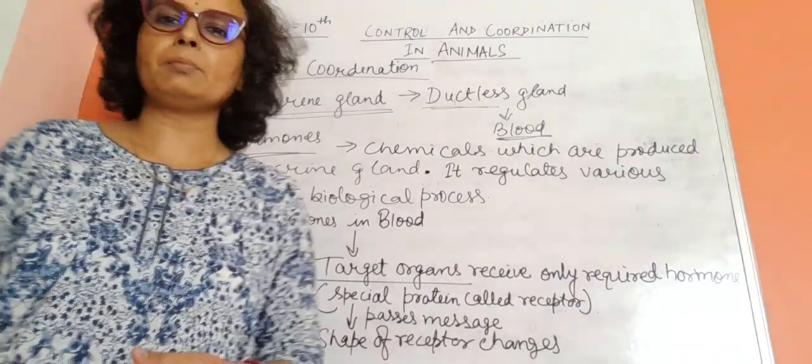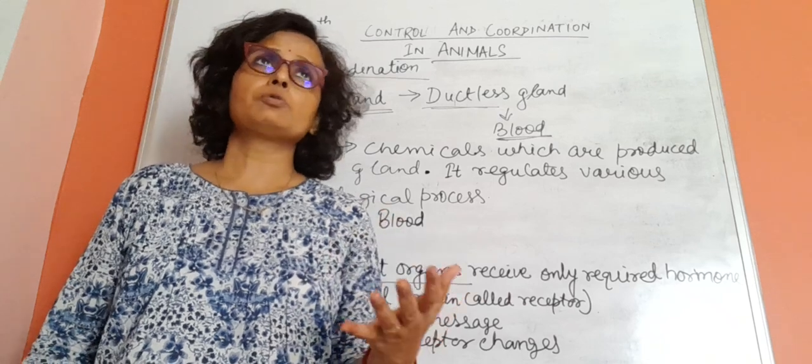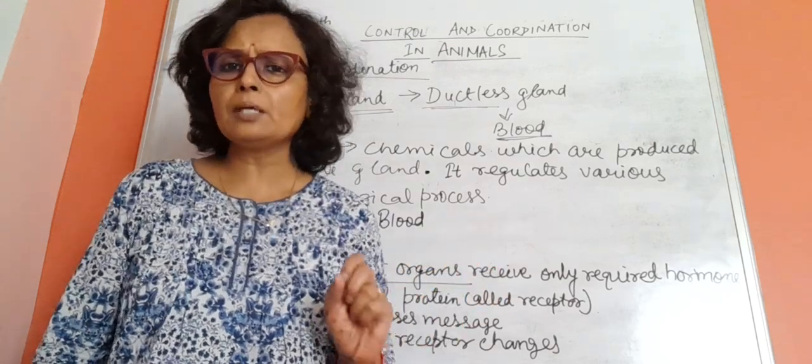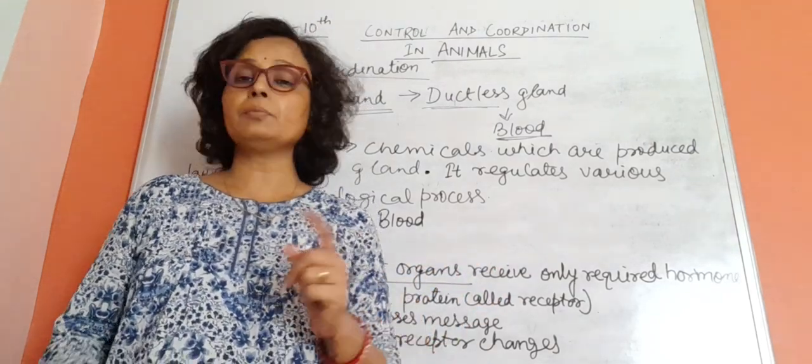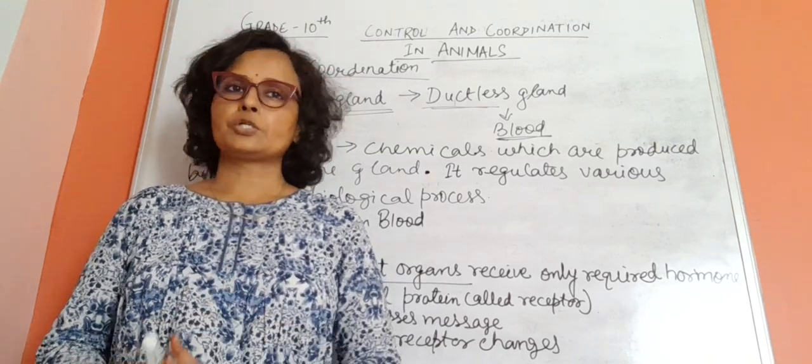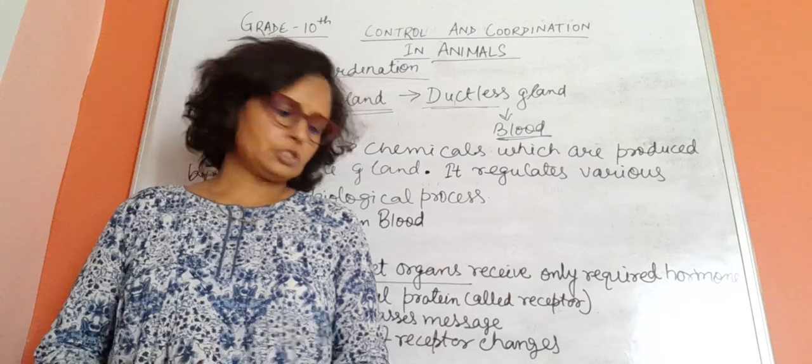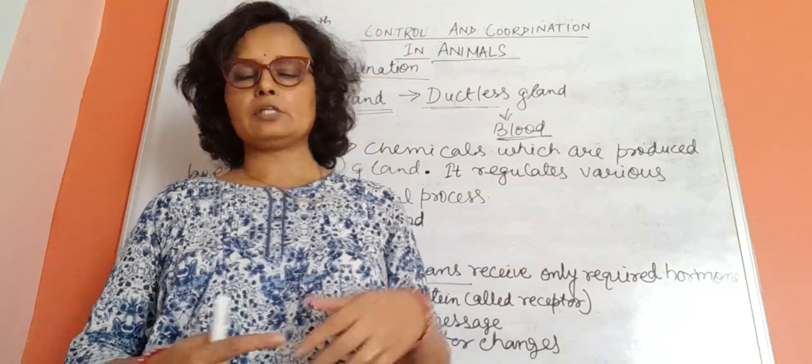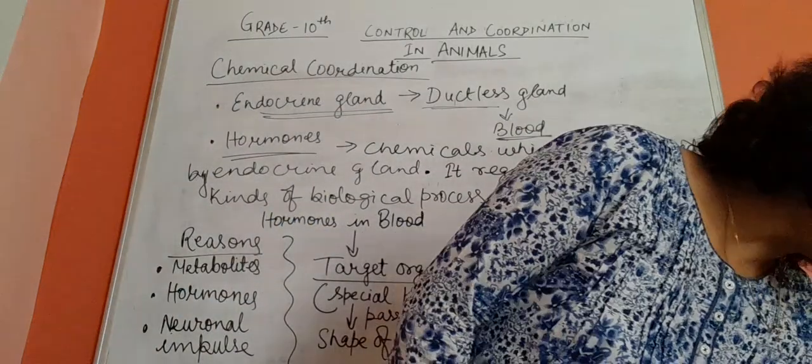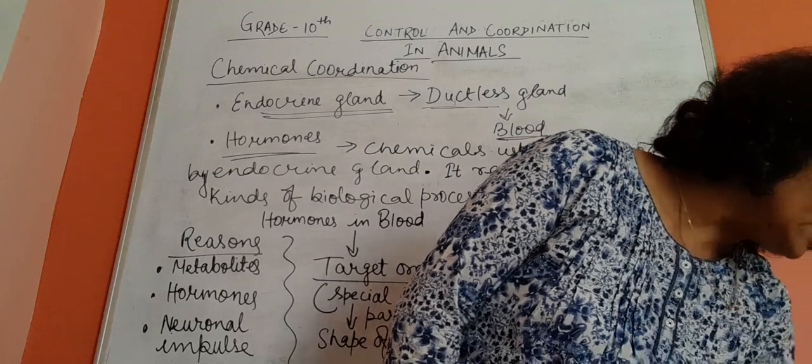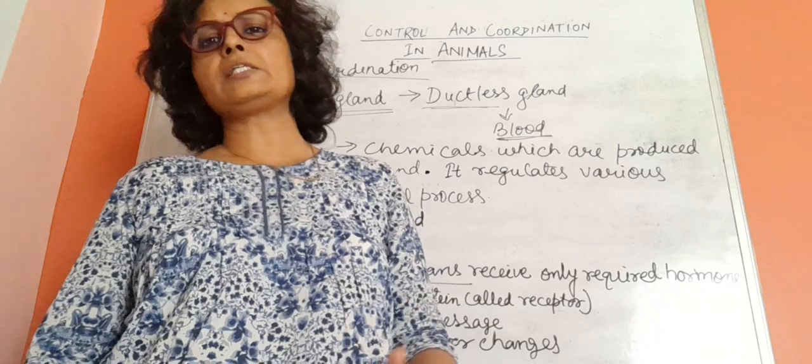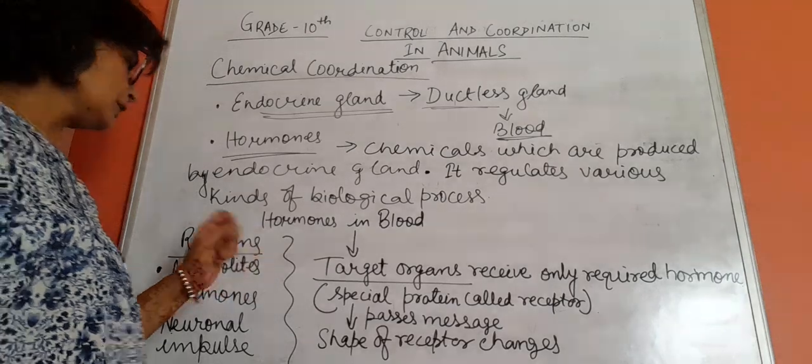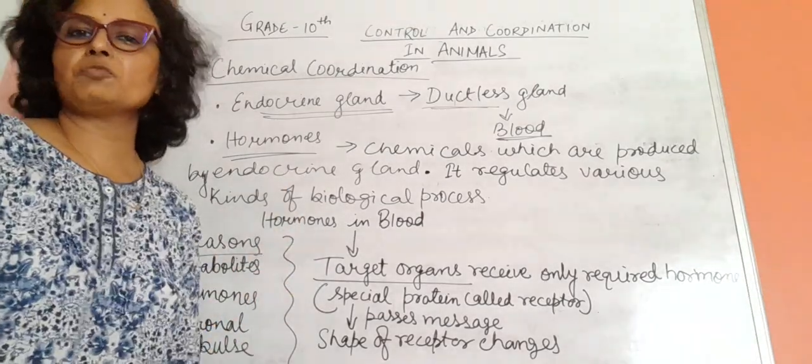Now third is neuronal impulse. There is a hormone produced from the adrenal gland called adrenaline. Adrenaline completely depends upon nerve impulses. When will it increase? During anxiety, stress, fear, or other kinds of dangerous situations. In such situations, adrenaline is released. So stress, impulses, hormones, and metabolites are the reasons for release of hormones.